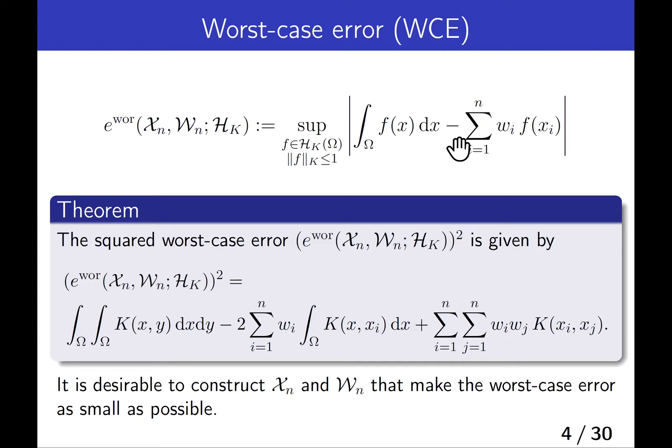It is well known that the squared worst-case error is given by this explicit formula, which depends on the kernel, nodes, and weights. In general, it is desirable to construct nodes and weights that make the worst-case error as small as possible.